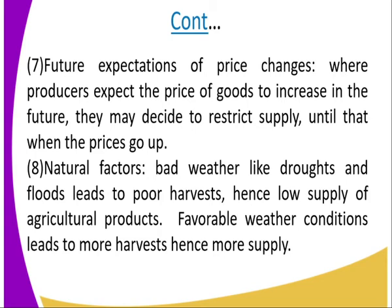Number eight is natural factors. Bad weather like droughts and floods leads to poor harvest and low supply of agricultural products. Favourable weather conditions lead to more harvest and higher supply.